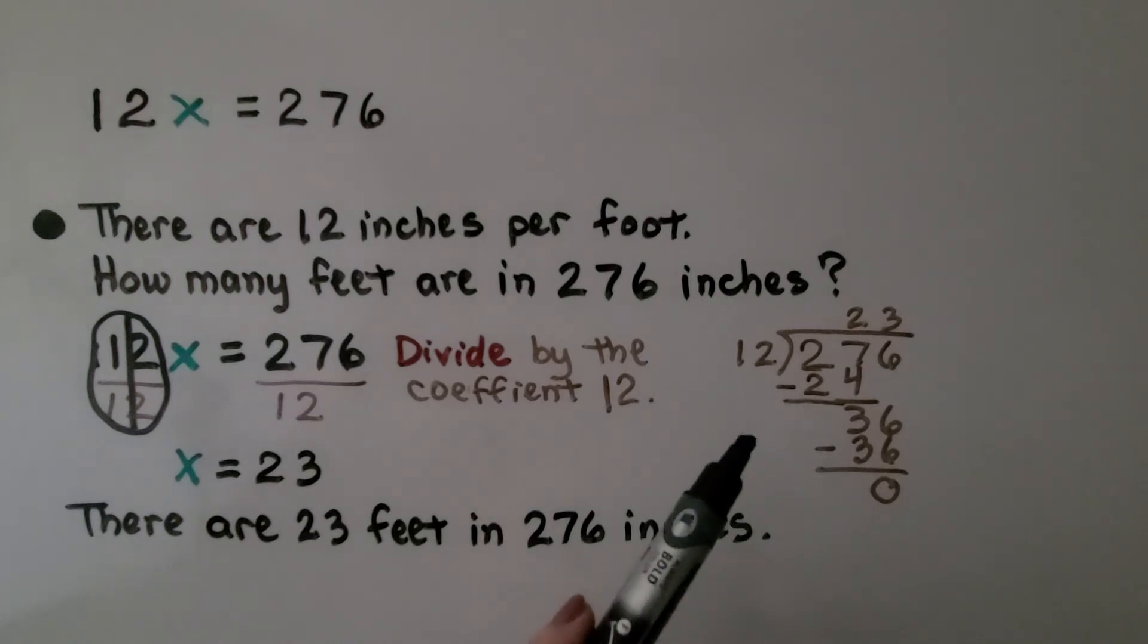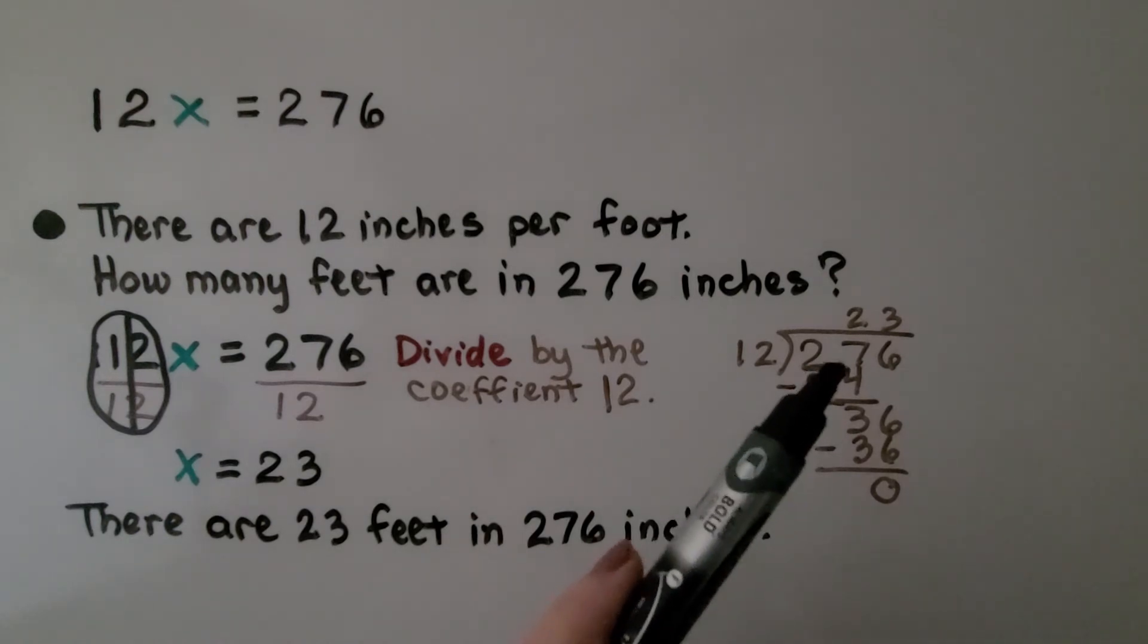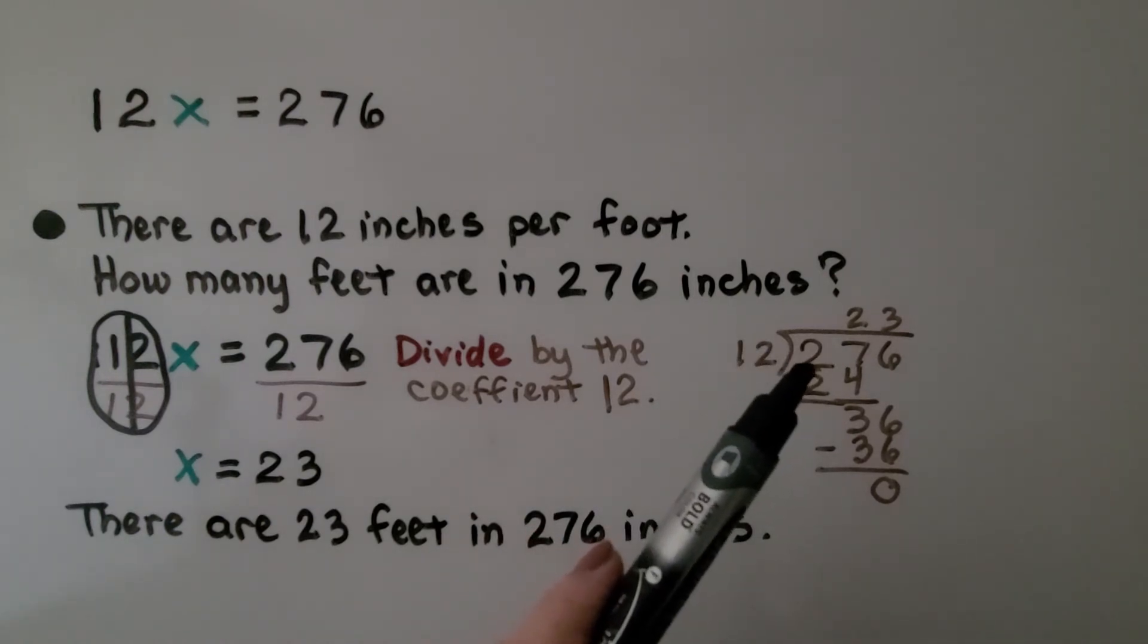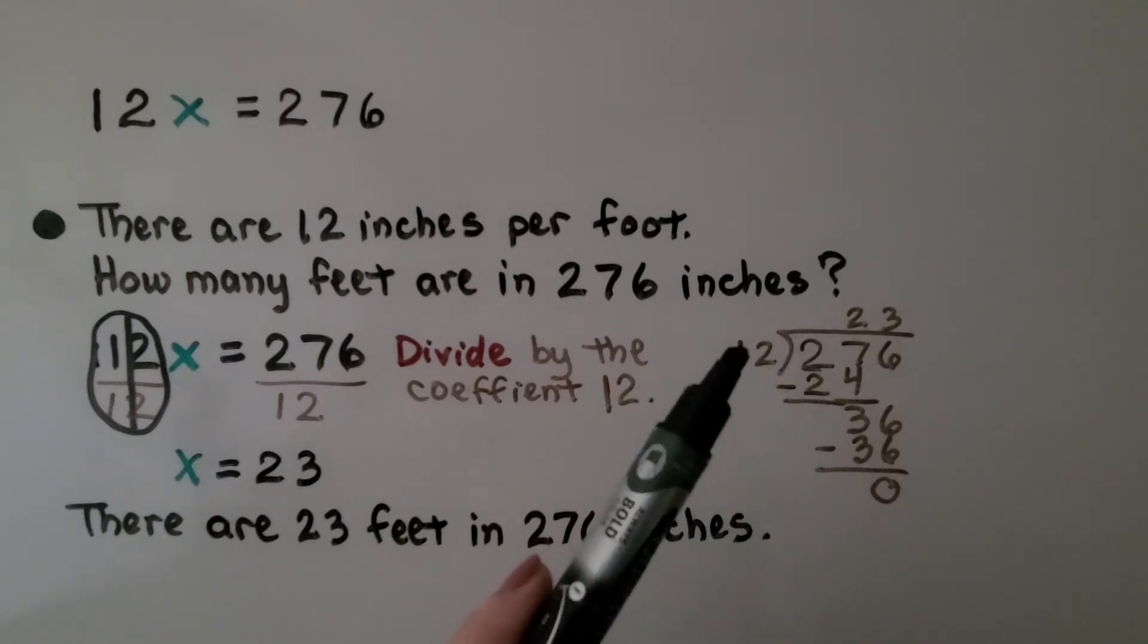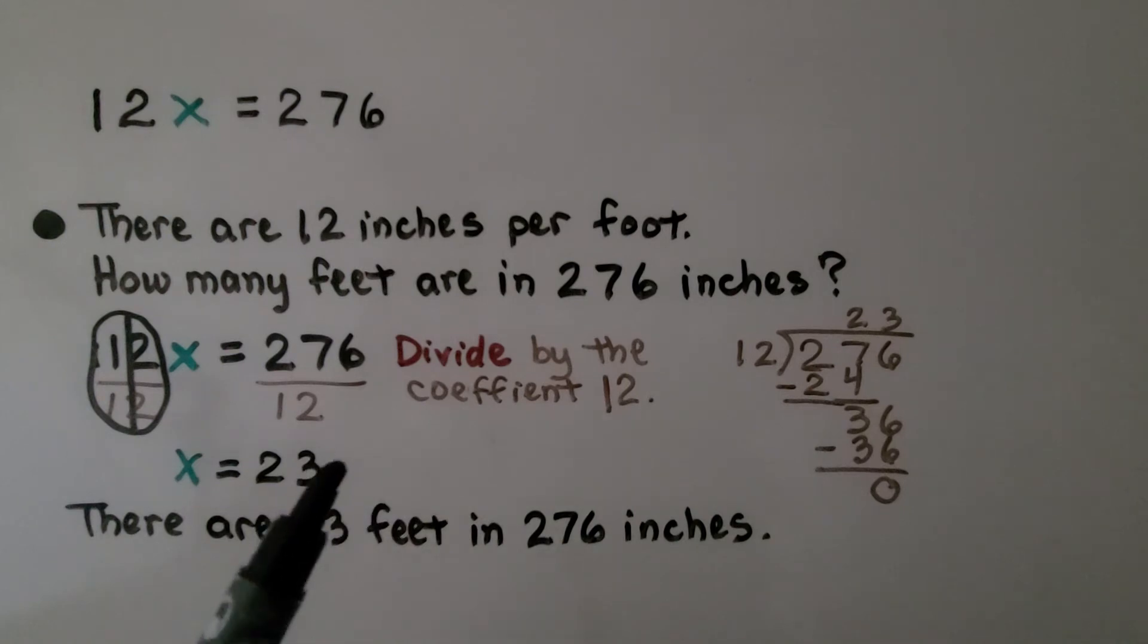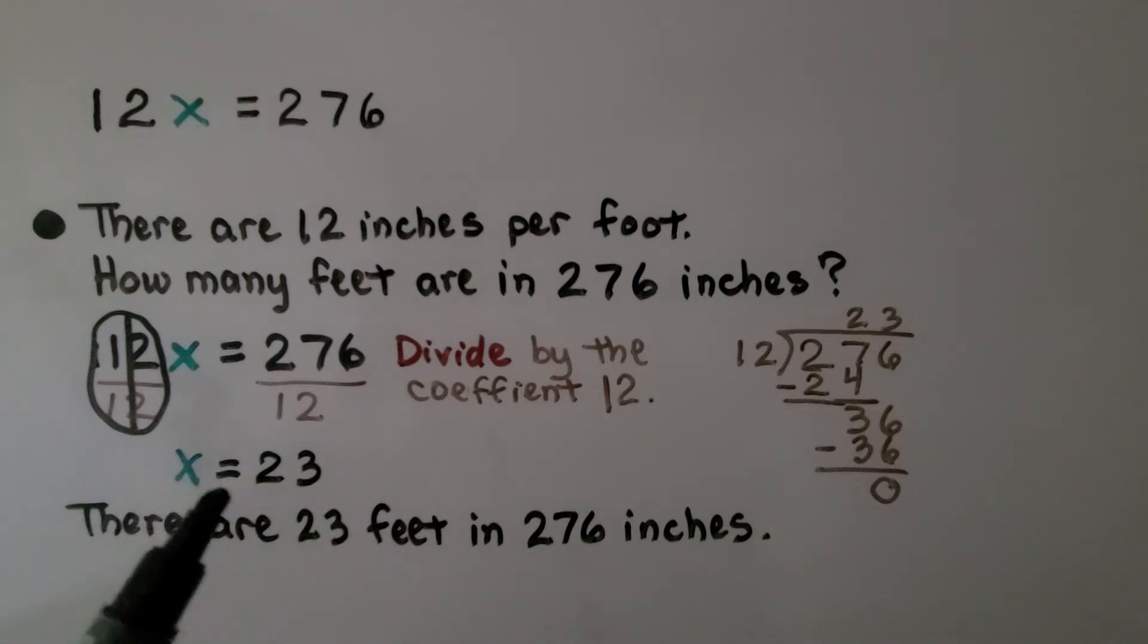And we can get some scratch paper to find how many times 12 fits into 276. 276 divided by 12 is 23. We know x equals 23. So there are 23 feet in 276 inches.